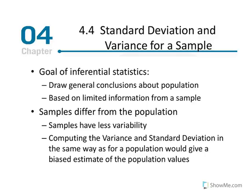The goal of inferential statistics is by definition to draw conclusions about a population using sample statistics. We draw conclusions about a population based on limited information from a sample. We use samples because it's hard to obtain or have access to all members of a population. Samples have less variability, and computing the variance and standard deviation the same way as for a population would give a biased estimate of the population values.